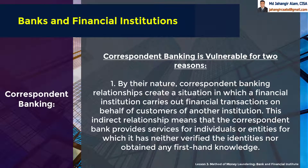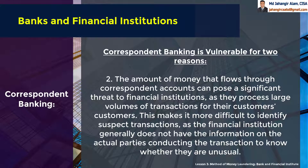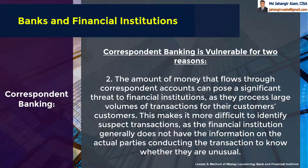Correspondent banking is vulnerable for two reasons. First, by their nature, correspondent banking relationships create a situation in which a financial institution carries out financial transactions on behalf of customers of another institution. This indirect relationship means the correspondent bank provides services for individuals or entities for which it has neither verified the identities nor obtained any first-hand knowledge. The amount of money that flows through correspondent accounts can pose a significant threat, as institutions process large volumes of transactions for their customers' customers, making it more difficult to identify suspect transactions.